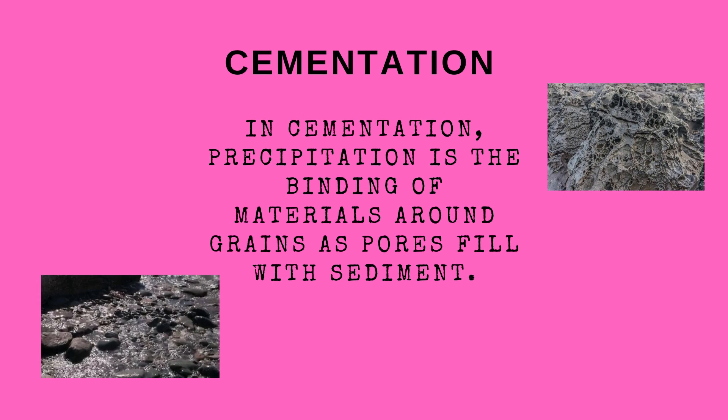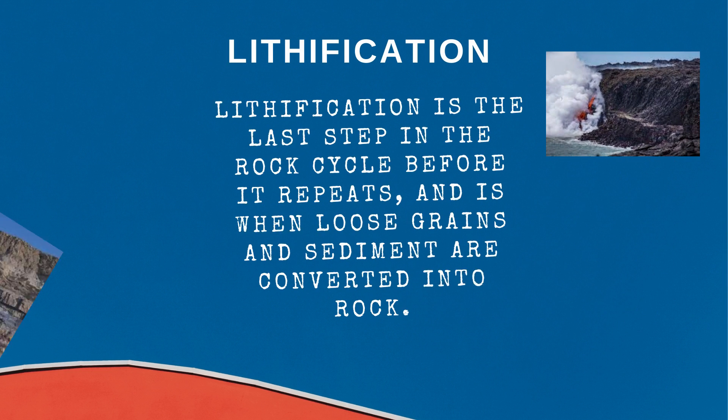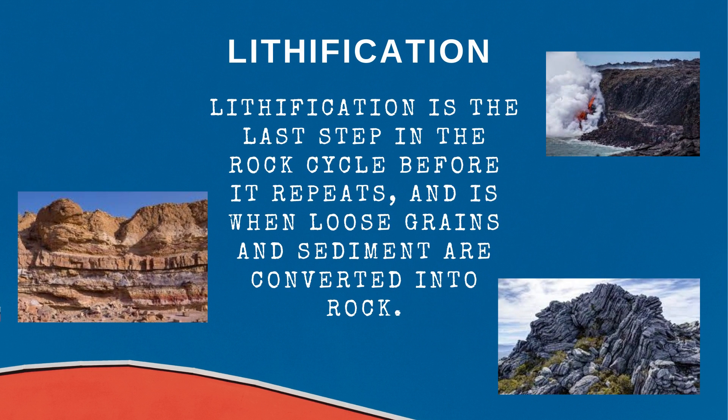In cementation, precipitation is the binding of materials around grains as pores fill with sediment. Lithification is the last step in the rock cycle before it repeats, and is when loose grains and sediment are converted into rock.